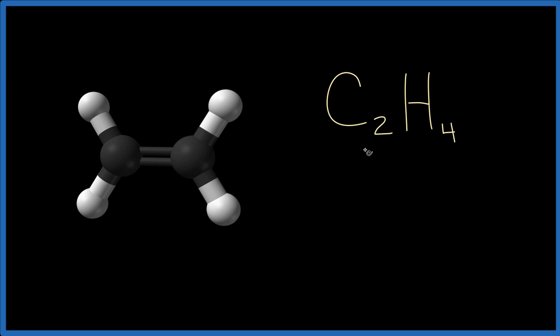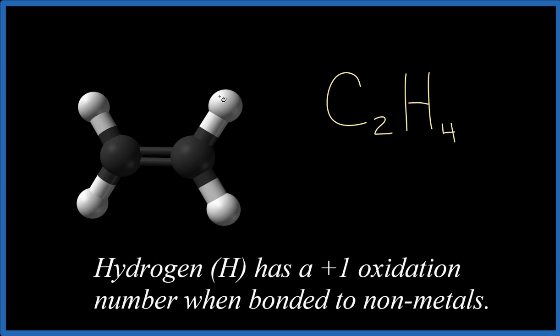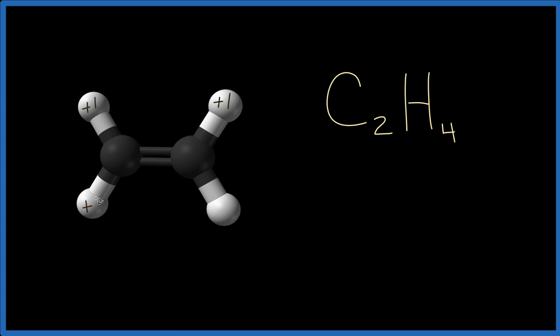So let's figure out the oxidation numbers for each of the atoms, the carbon and the hydrogen, in this C2H4 molecule. We know that hydrogen has a plus one oxidation number when it's bonded to a non-metal. Carbon's a non-metal, so each of these hydrogens, the white atoms here, they have a plus one oxidation number.